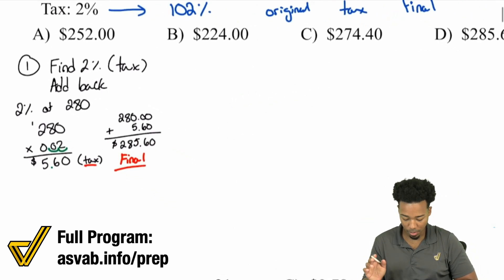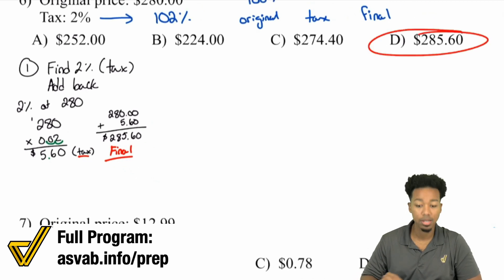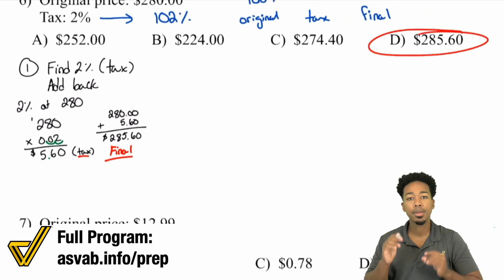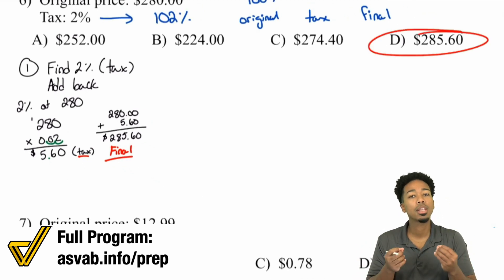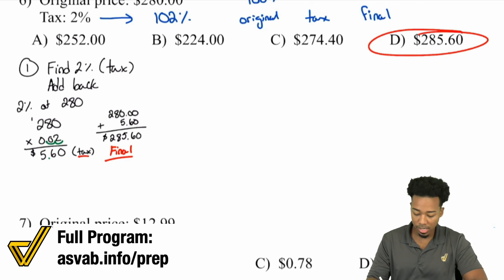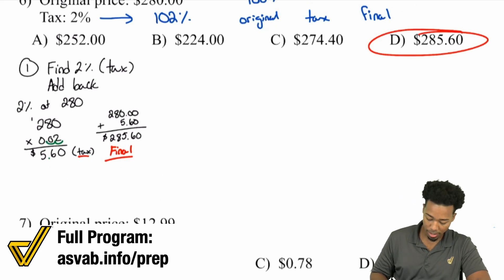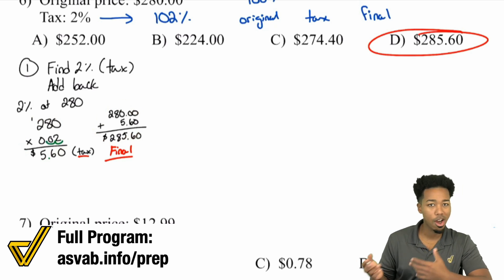That $285.60 is the final cost after tax. The $5.60 was the tax amount, and once you add it back, you have your final price. The answer is $285.60. Now let me show you the second method, where instead of two steps, we do it all in one.